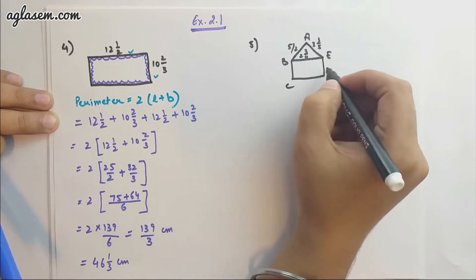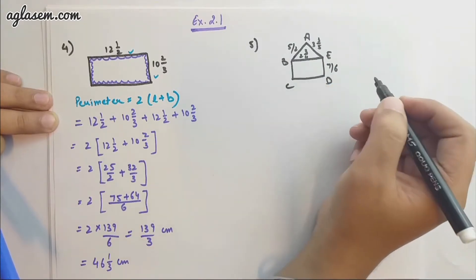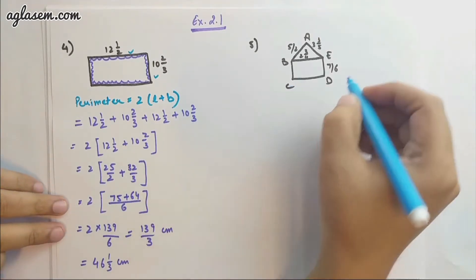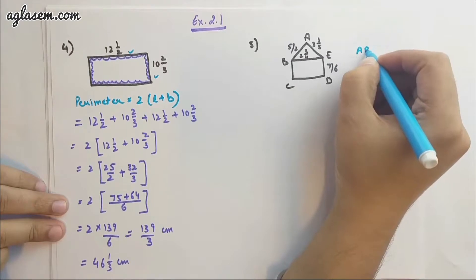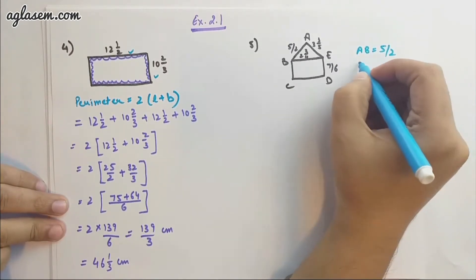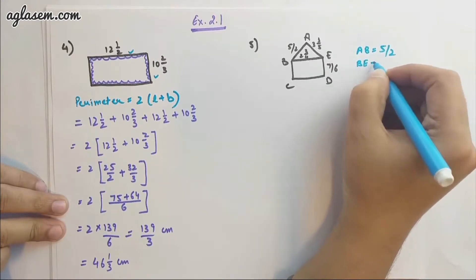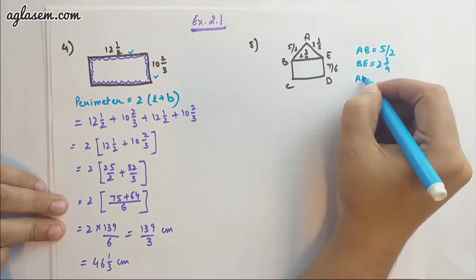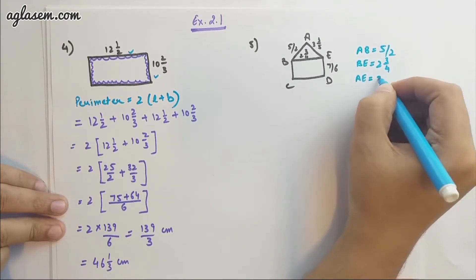Let me write to make it more clear since it's not visible to everyone. AB is 5/2, BE is 2 3/4, and AE is 3 3/5.